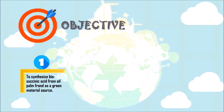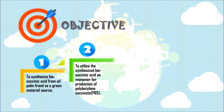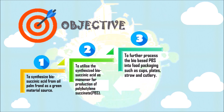The main objectives are: 1. To synthesize bio succinic acid from oil palm frond as a green material source. 2. To utilize the synthesized bio succinic acid as monomer for production of polybutylene succinate, PBS. 3. To further process the bio-based PBS into food packaging such as cups and plates.